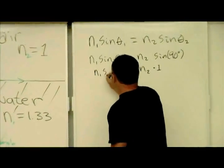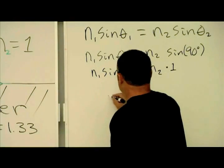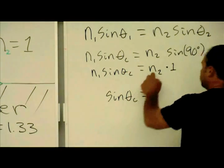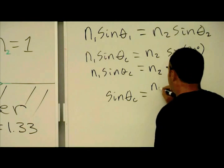And I can now solve for sine of the critical angle. Sine of the critical angle is simply N2 divided by N1.